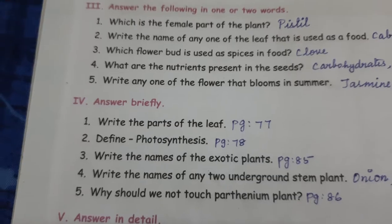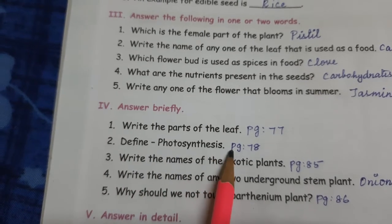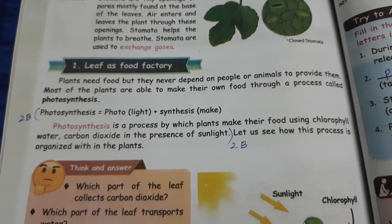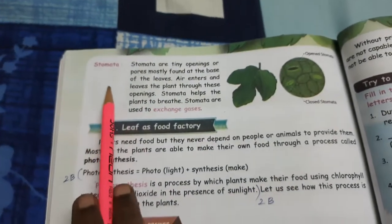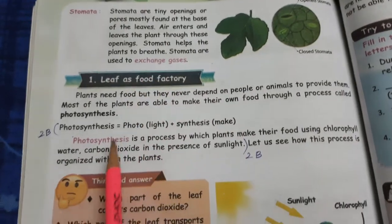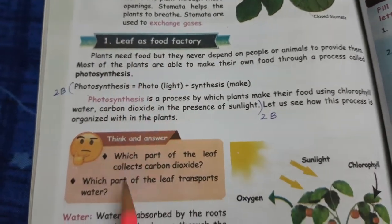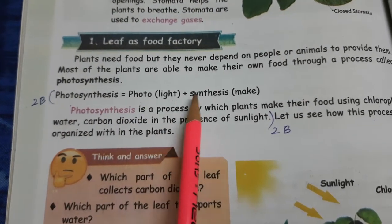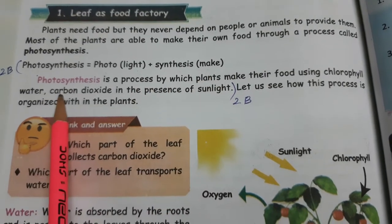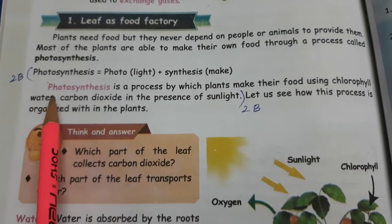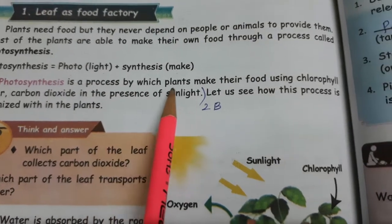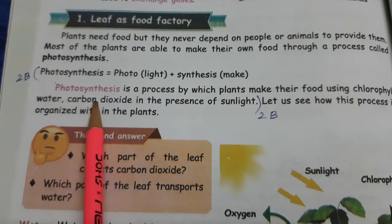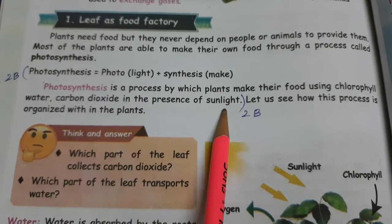Second question: define photosynthesis. This answer is on page number 78, under the subtopic 'Leaf as a Food Factory.' Photo means light, synthesis means make. Photosynthesis is a process by which plants make their food using chlorophyll, water, and carbon dioxide in the presence of sunlight.